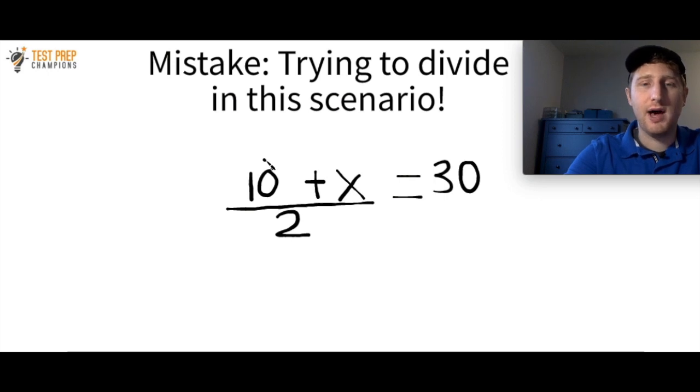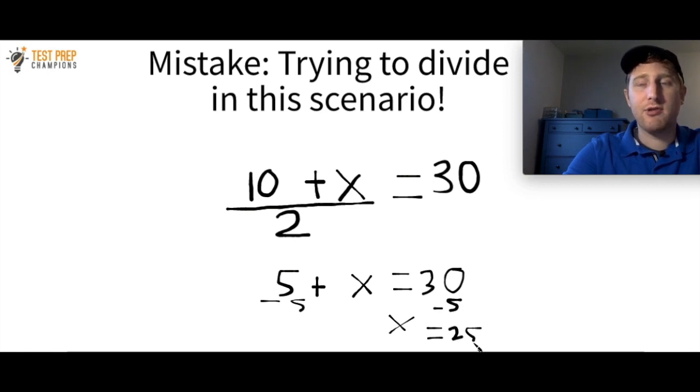Okay, let's talk about this. So what a lot of people would try to do here is they would say, well, 10 divided by 2 is 5. And then they would say, well, I now have 5 plus x equals 30. And they'll try to subtract 5 from both sides. And they will say, well, x equals 25. That's the right answer. But that's not the right answer. So that's not the correct way to do this question here.